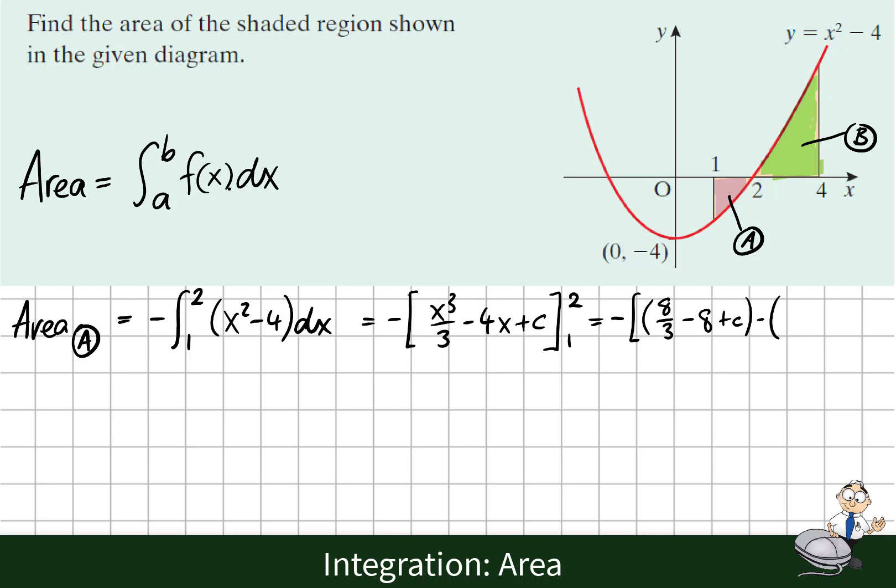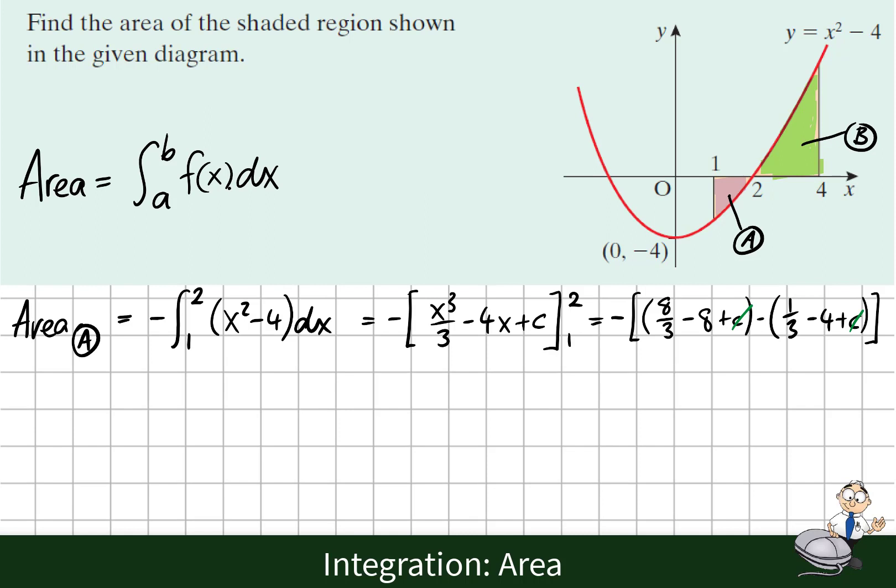Substituting in 2: 2³ is 8, so that's 8/3 - 4(2) which is 8, plus c. We're taking away when we substitute in 1: 1³ is 1, so that's 1/3 - 4(1) which is 4, plus c. The c values here cancel out. Evaluating this: it's -8/3 - 1/3, and we have -8 + 4. This equals 1 and 2/3.